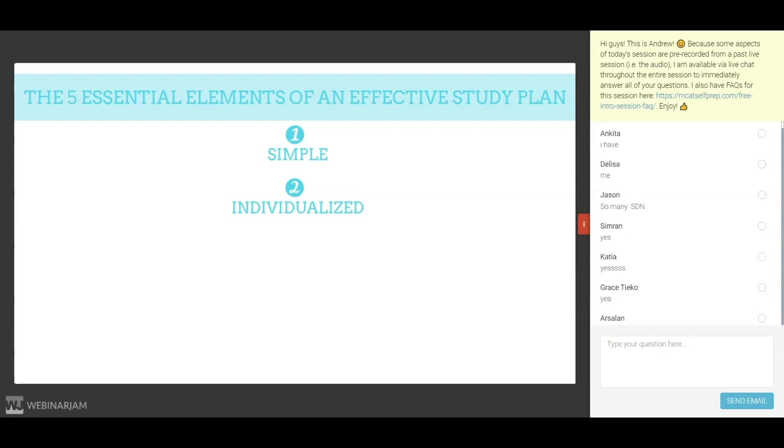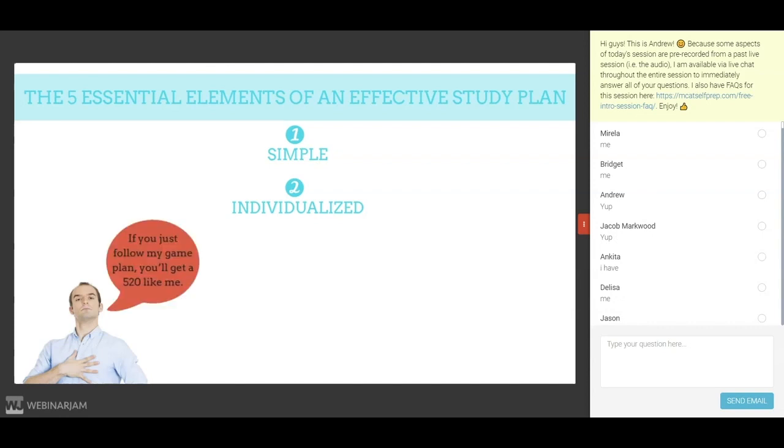And if you search online, you can find tons of people who are willing to share their MCAT study plan with you. They may even premise it by saying something like, if you just follow my game plan, you'll get a 520 like me. Don't fall for this. The study plan may have worked for that extremely unique individual, but it likely won't work for you. Why? Because you both have totally unique needs.